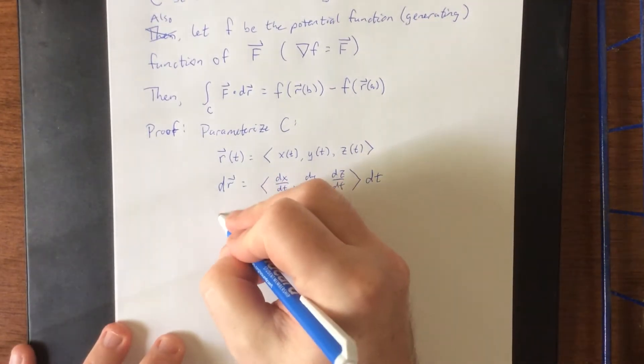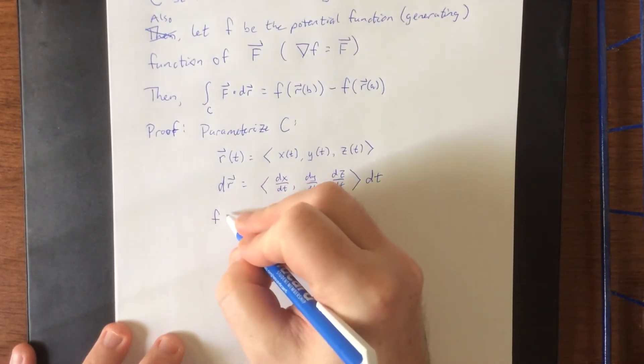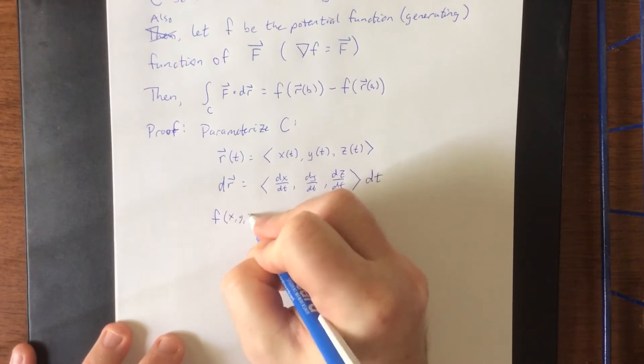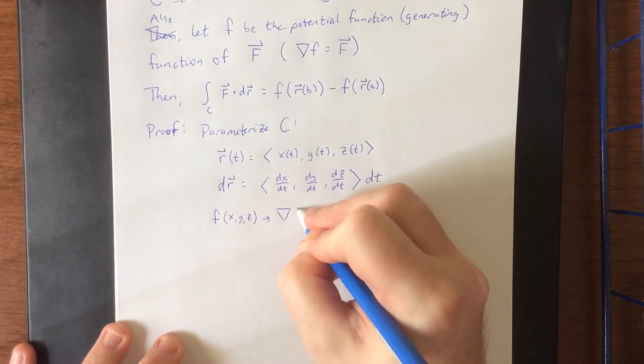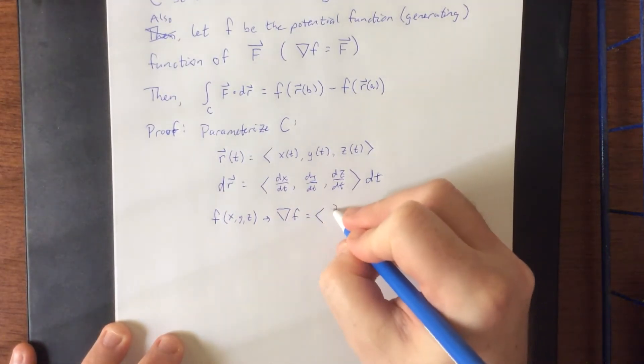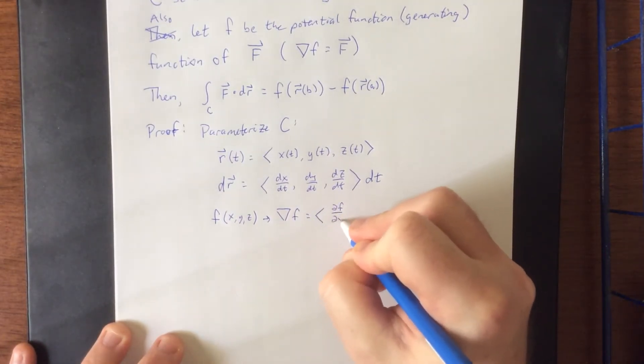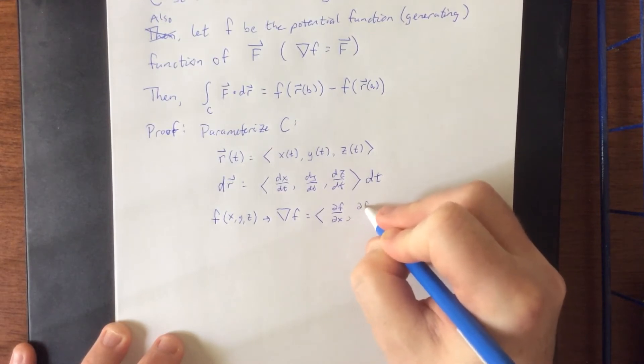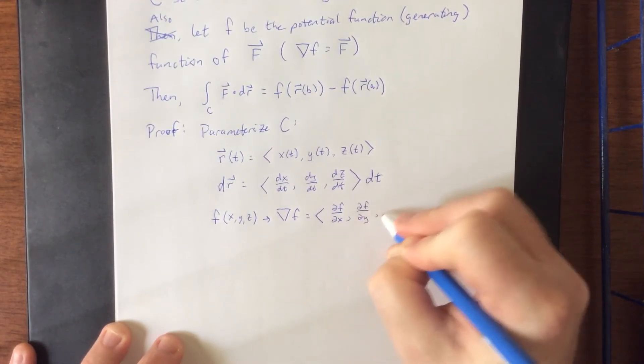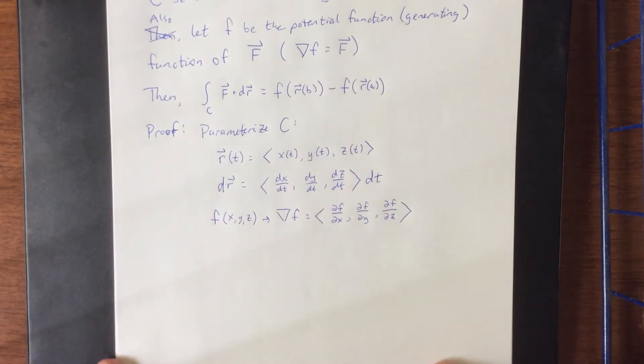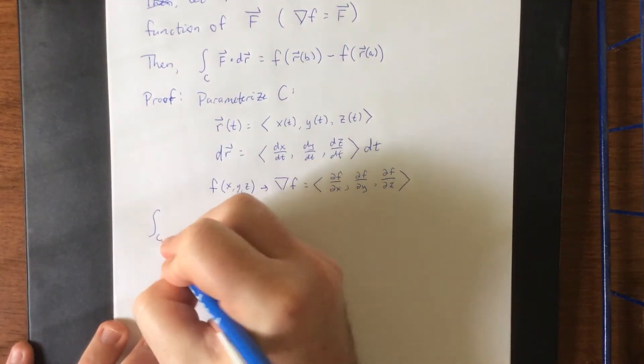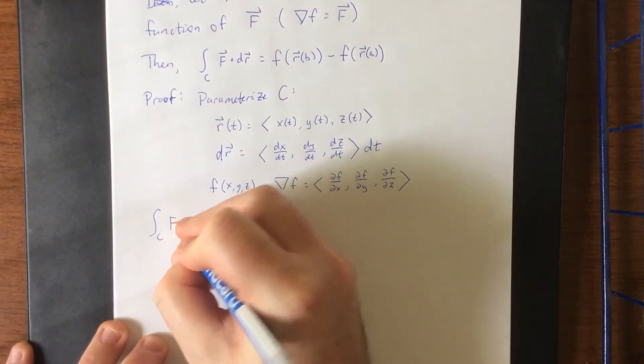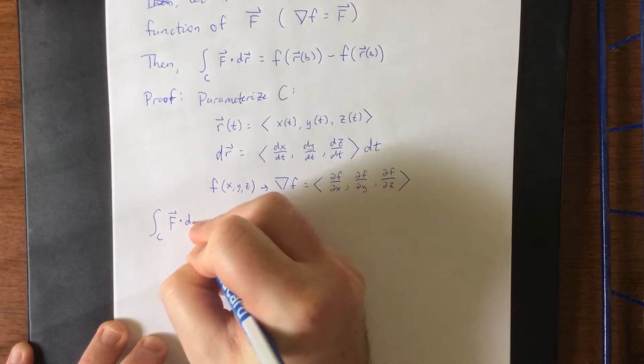Still got to be expressed in terms of a vector, though. Also, we have our potential function, F of X, Y, and Z. Meaning that the gradient of F is going to be the following function: partial of F with respect to X, partial of F with respect to Y, and the partial of F with respect to Z. Now, once we have these parameterizations in place, we can consider the line integral over the curve C of F dot DR.